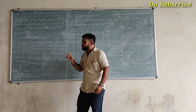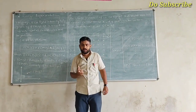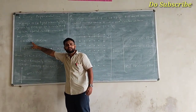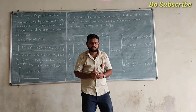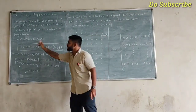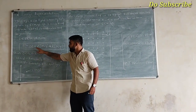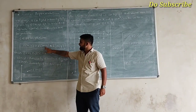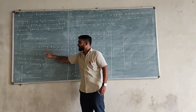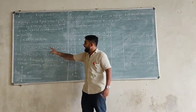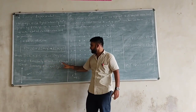f(x, y) is the arrangement of any image in mathematical form. x, y are the coordinates of an image where f represents the image. But how is any image created? How does f(x, y) get created? f(x, y) is fundamentally equal to r(x, y) multiplied by i(x, y). What is r(x, y) and i(x, y)? r(x, y) is nothing but the reflectivity of a surface of the image.